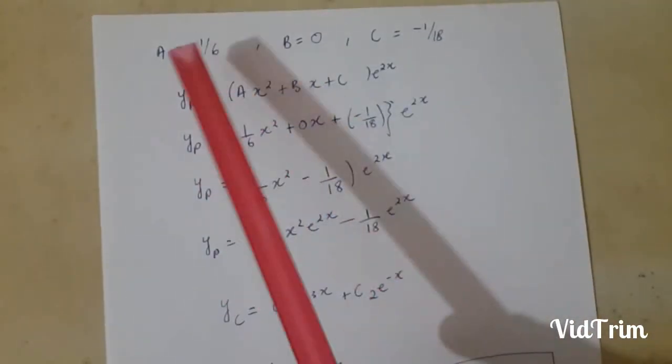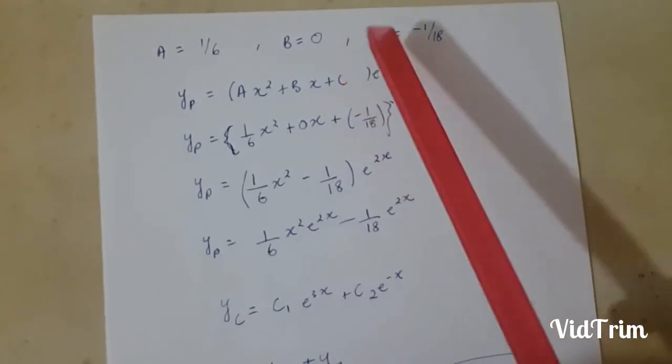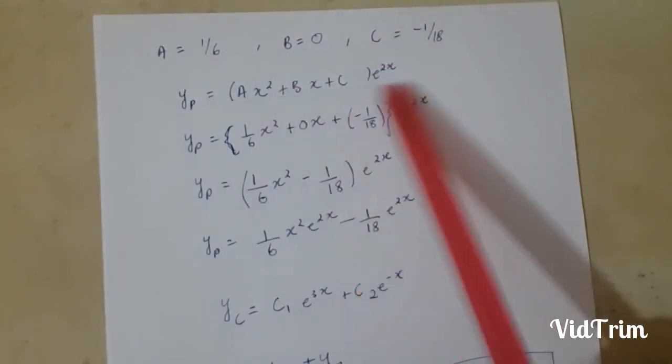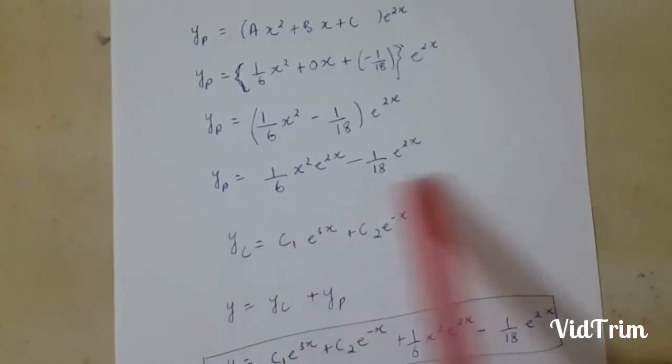Now we have the values of a, b and c. So I will simply put the values of a, b and c in our yp equation. After that I got this, and by simplifying I get this equation.